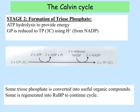Stage two is the formation of triose phosphate. We use ATP hydrolysis to provide energy and we reduce glycerate phosphate by adding hydrogens to it, which are provided from reduced NADP. For 2 GP, you use two molecules of ATP to provide energy and two molecules of reduced NADP, which become oxidised — and that makes two molecules of triose phosphate. The oxidised NADP and the ADP then go back to the light dependent stage to collect more hydrogens and energy.